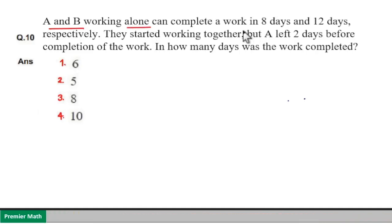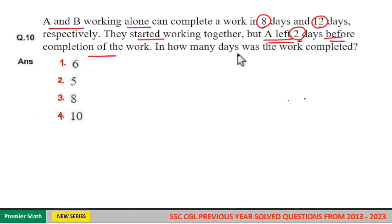A and B working alone can complete a work in 8 days and 12 days respectively. They started working together, but A left 2 days before the completion of the work. In how many days was the work completed?